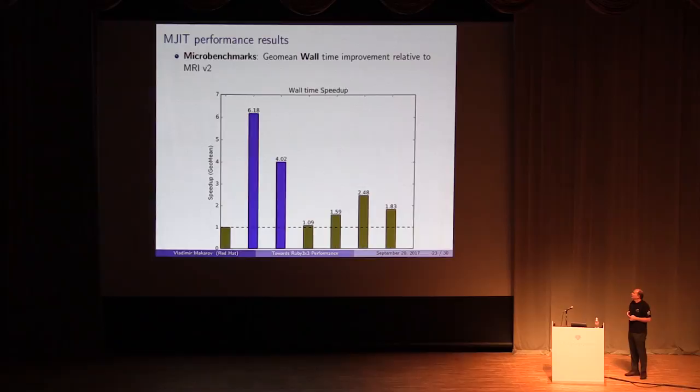I also used OptCaret benchmark. It's a medium-sized Ruby program, a Nintendo game computer emulator. It's a very well-designed benchmark for JIT comparisons. Here is a real-time or wall-time improvement for these small benchmarks. The numbers are actually a geometric mean of all improvements relative to MRI version 2. As you can see, MJIT with GCC gives the best performance results.